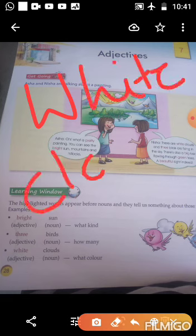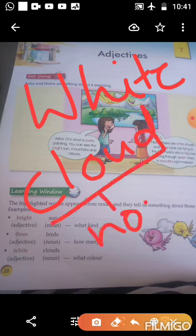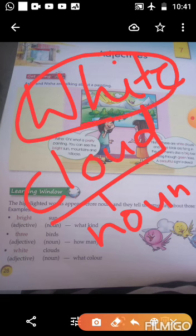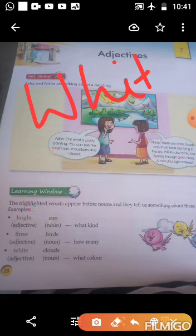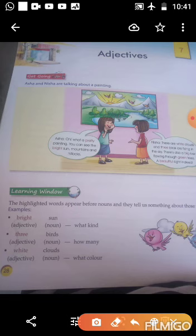White cloud — cloud is a noun. White is the adjective that tells us the color of the cloud. What color? White color. So white is an adjective describing the cloud.